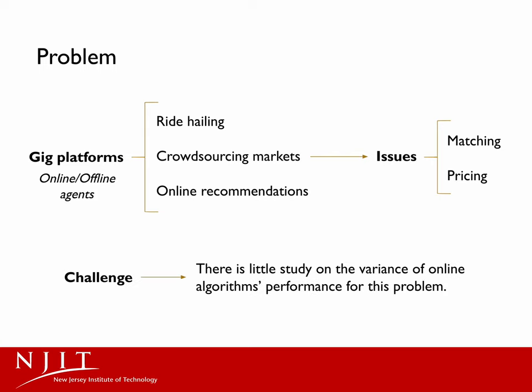However, one challenge arises when we aim to tackle these two issues. That is, unlike the popular competitive ratio metric, there has been little study on the variance of online matching algorithm performance, even though it is well linked to robustness.